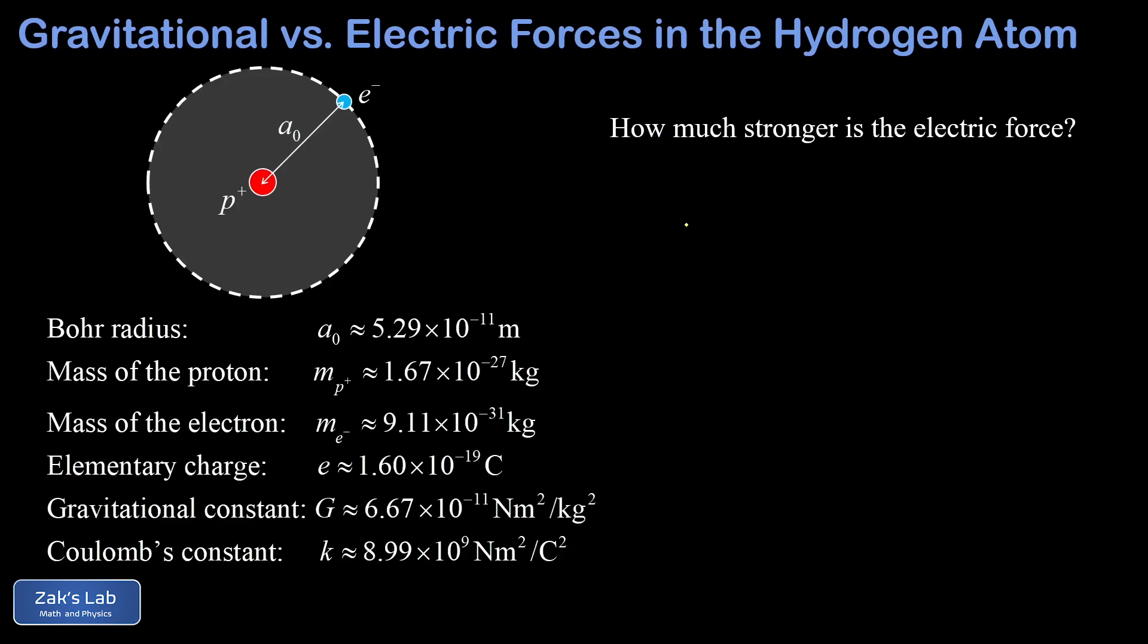And I think the most natural way to answer this is to take a ratio of the two forces. So we're going to take the electric force and divide that by the gravitational force. And this tells us how many times bigger the electric force is compared to the gravitational force.